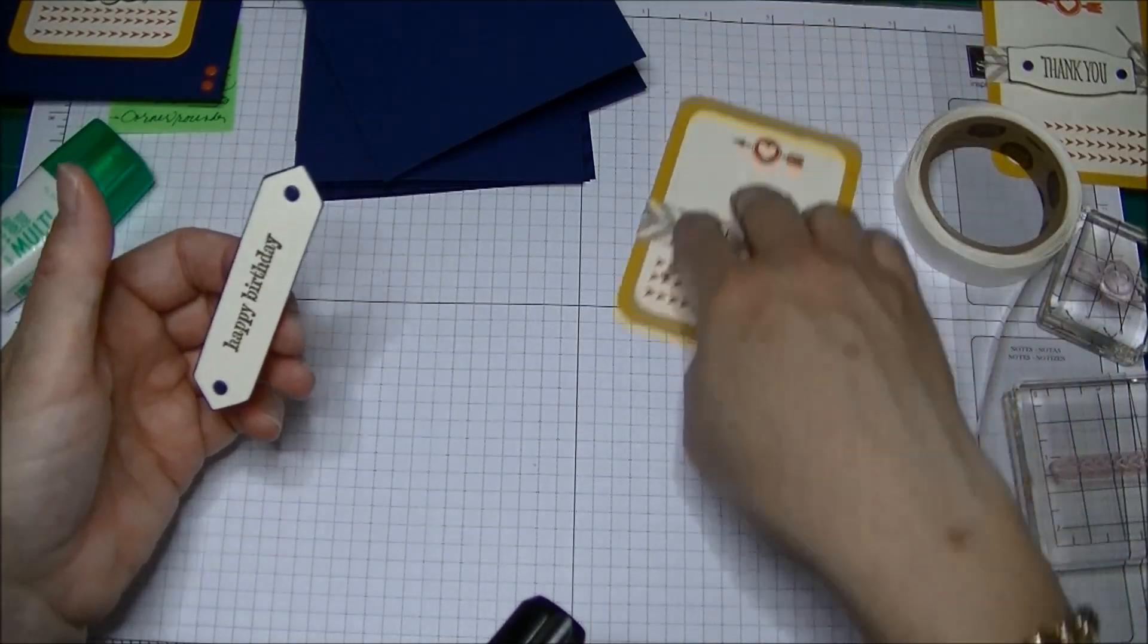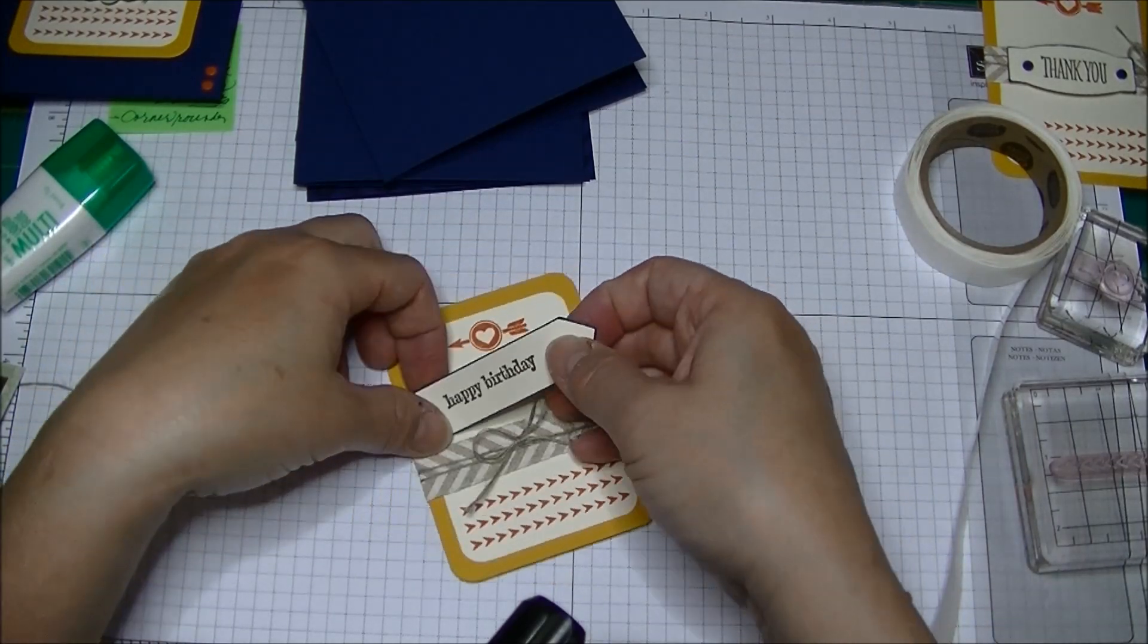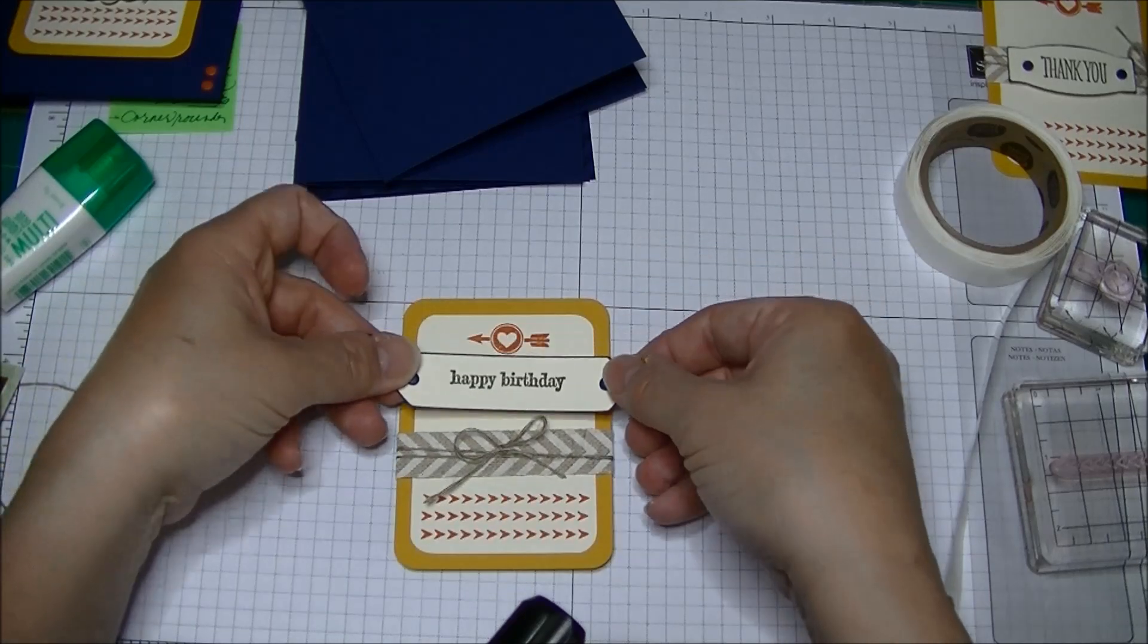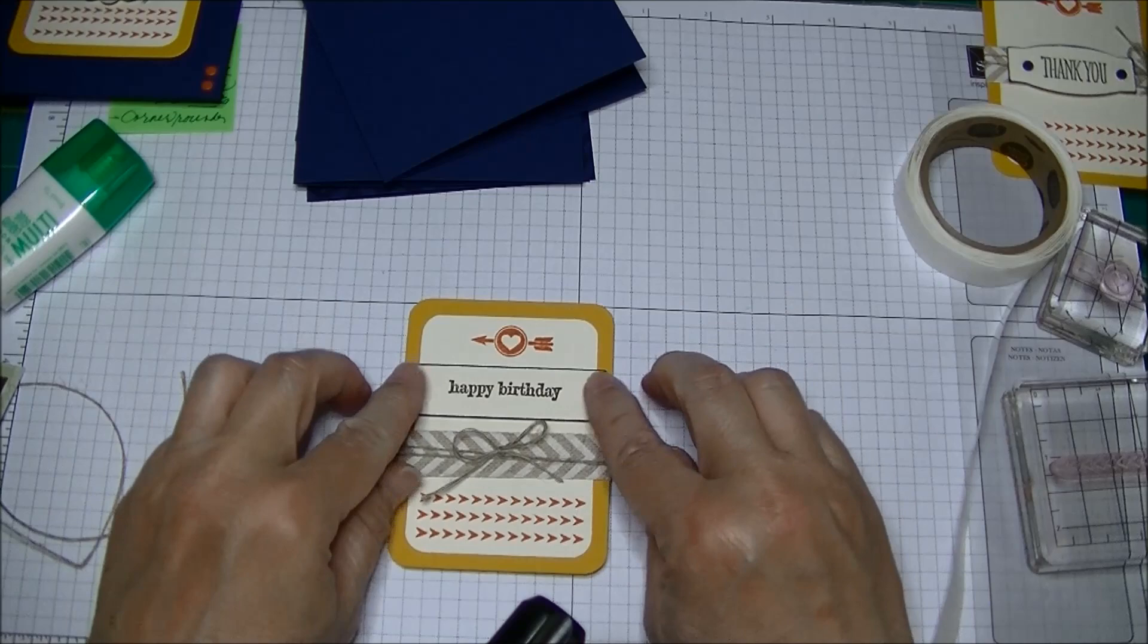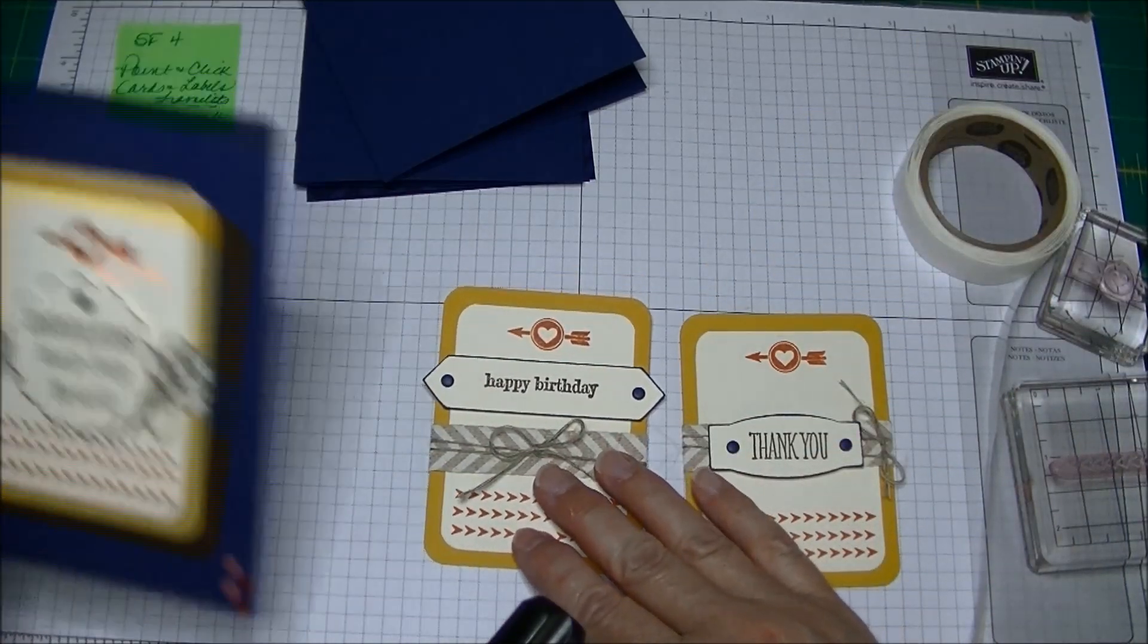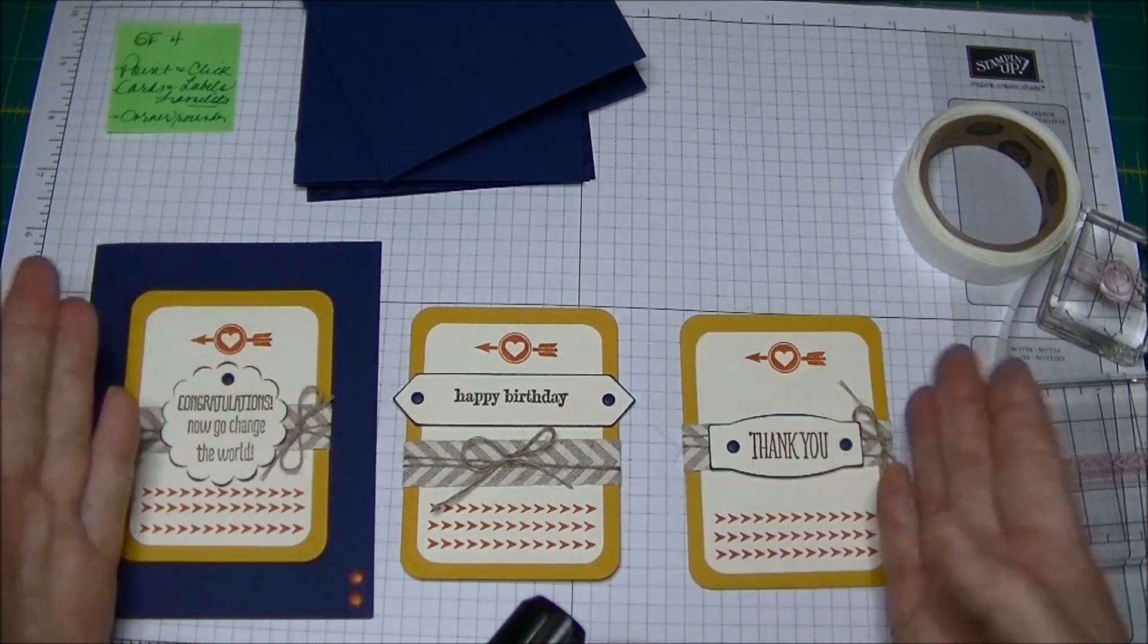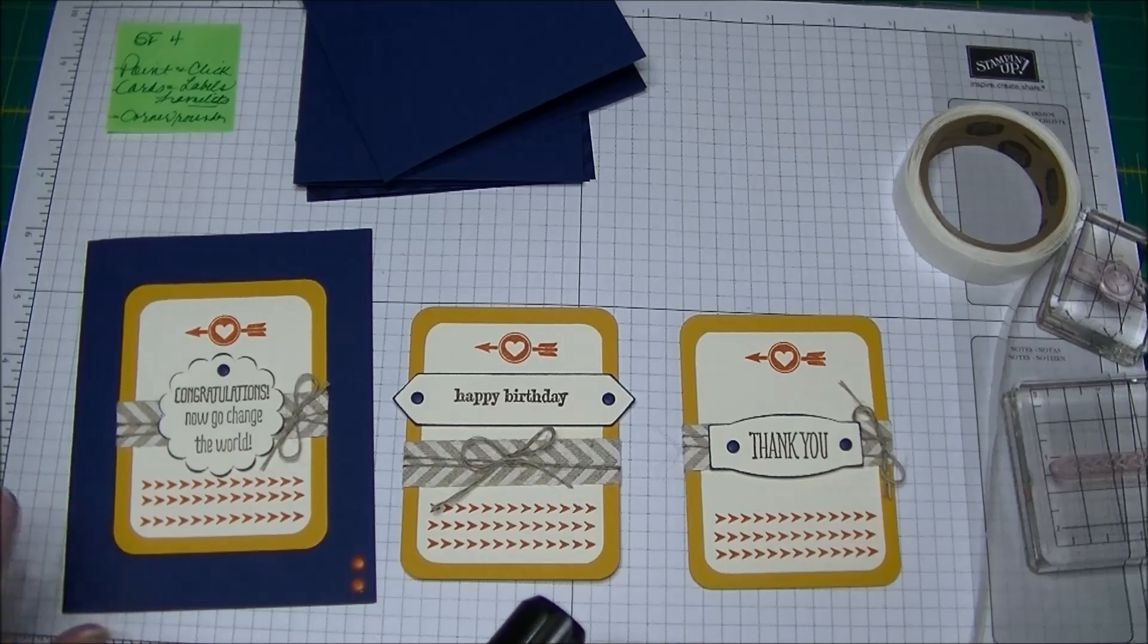Now I'm putting three glue dots on the back of this and I'm just going to hopefully center this above. I want this one to hang off because I want this to look a little bit different. You can see I've already got three different looks with three different sentiments, so I'm making an entire card set for myself.